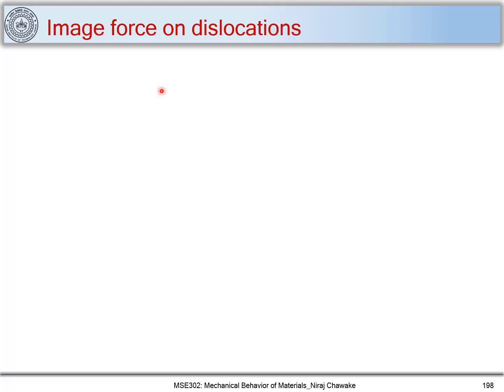In this part we are going to look at what is image force on a dislocation. We have seen dislocation interactions, where each dislocation exerts a force on another dislocation. Here, the image force is a force which is exerted by a free surface of a material on dislocations which are very near to it. So let's understand what is image force.